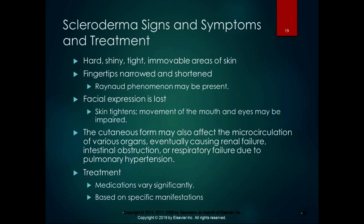Signs and symptoms of scleroderma include hard, shiny, tight, immovable areas of skin, narrowed and shortened fingertips, Raynaud's phenomenon with cold sensitivity, and loss of facial expressions because the skin tightens — impairing movement of the mouth and eyes. The cutaneous form can also affect microcirculation of various organs, eventually causing renal failure, intestinal obstruction, and respiratory failure due to pulmonary hypertension. Treatment is based on the specific manifestations and involves several different medications.